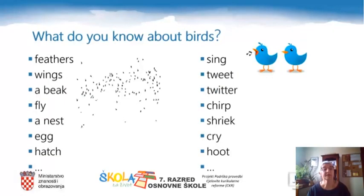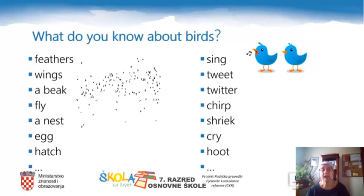Here are some words that you need to describe a bird. Birds have feathers and wings. They have a beak. Birds fly, they live in a nest, they lay eggs, and when eggs hatch, there are baby birds.